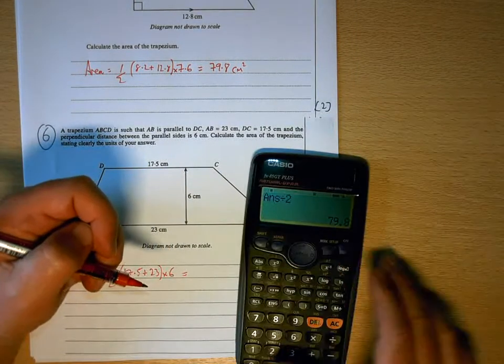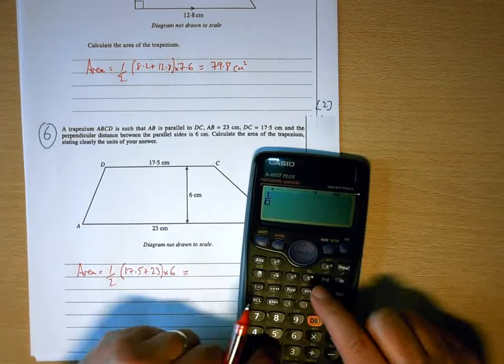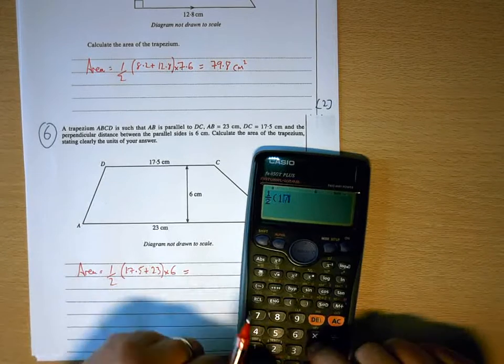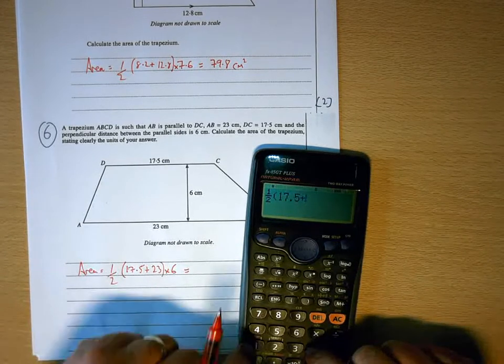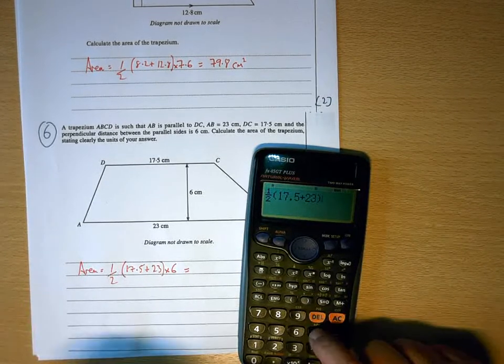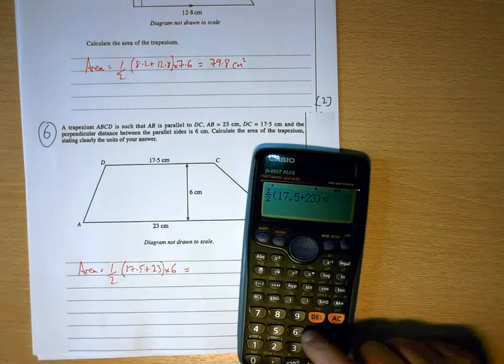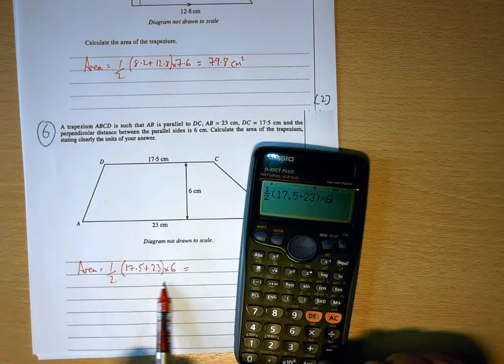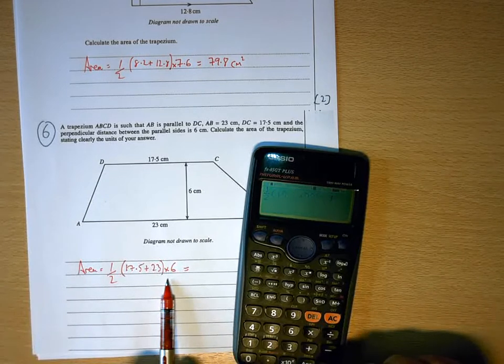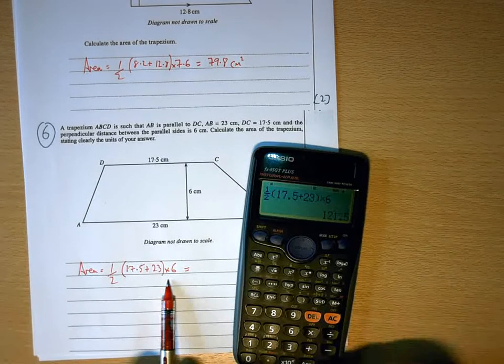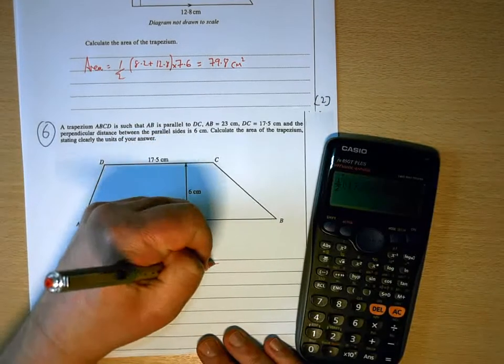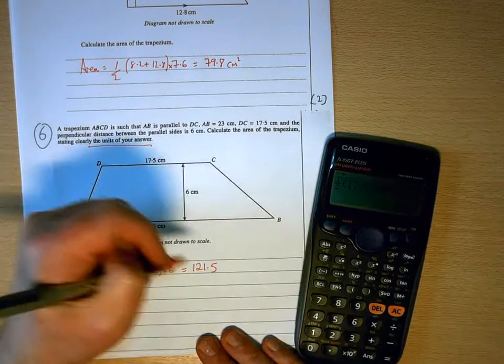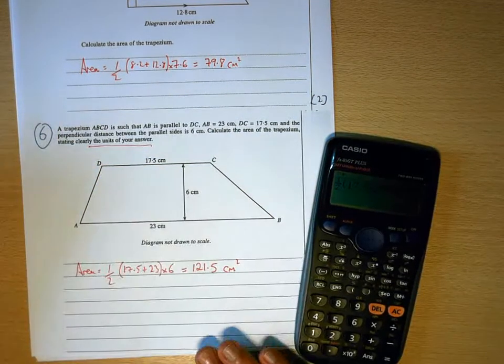So, on your calculator, fraction button, half, open bracket, 17.5, add 23, close bracket. Remember, it won't work unless you put the time symbol in, times 6. So it looks almost identical to what we've written there. Press equals. Turn it into decimal. 121.5. Clearly stating the units of your answer. Centimetres squared.